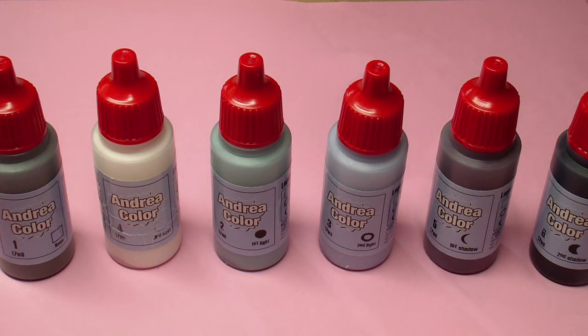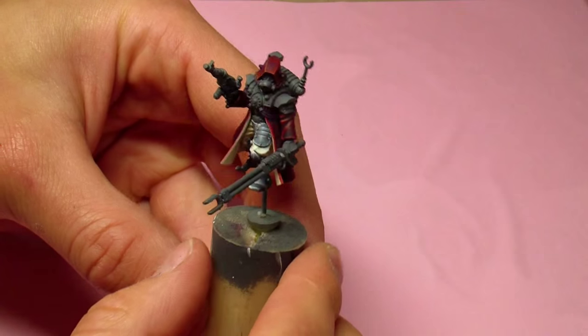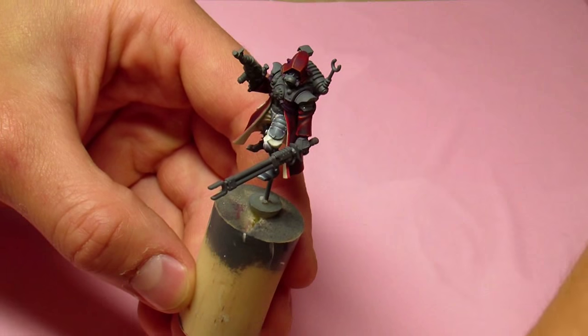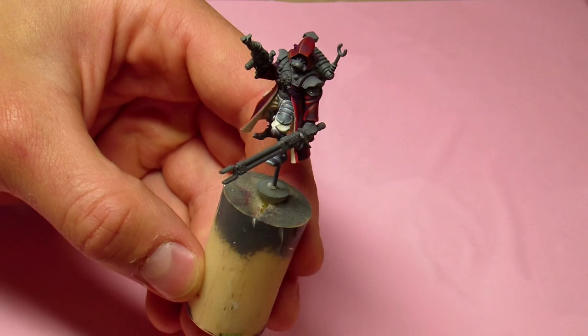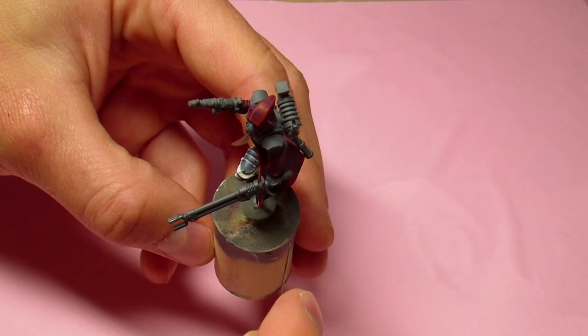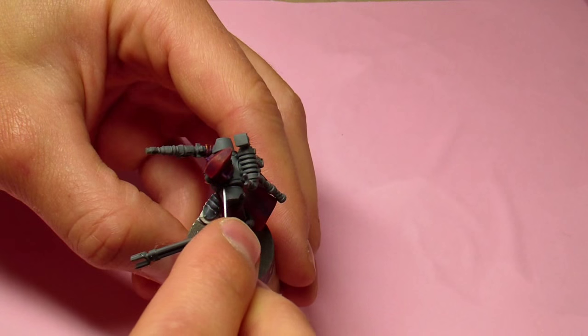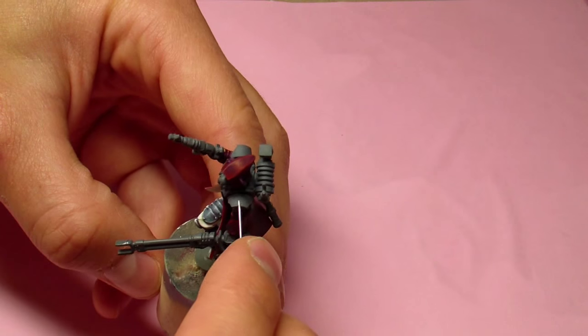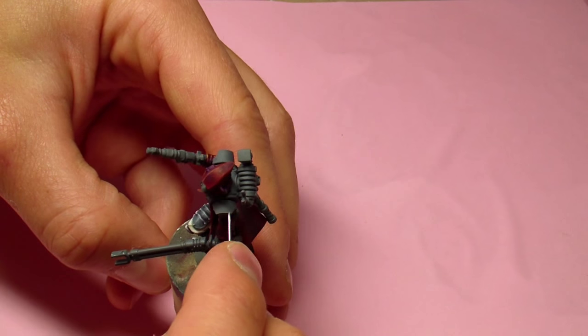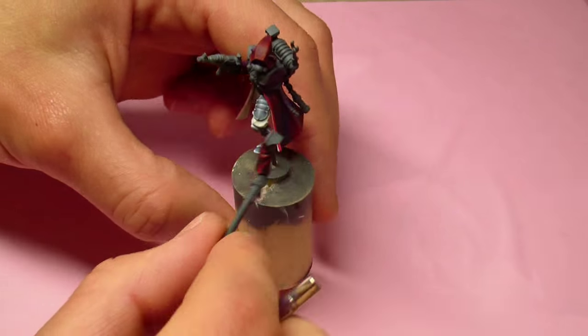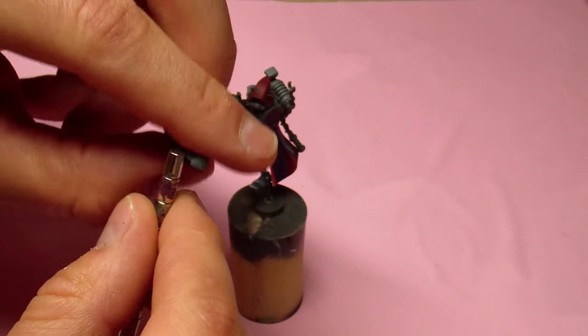So let's get on to the painting. We will be painting this Skitari model and we will paint his shoulder pads. What we want to achieve is non-metal metallic look with the brightest point in the middle part of this shoulder pad. To make the painting easier, I will remove this arm and we will be painting it separately.